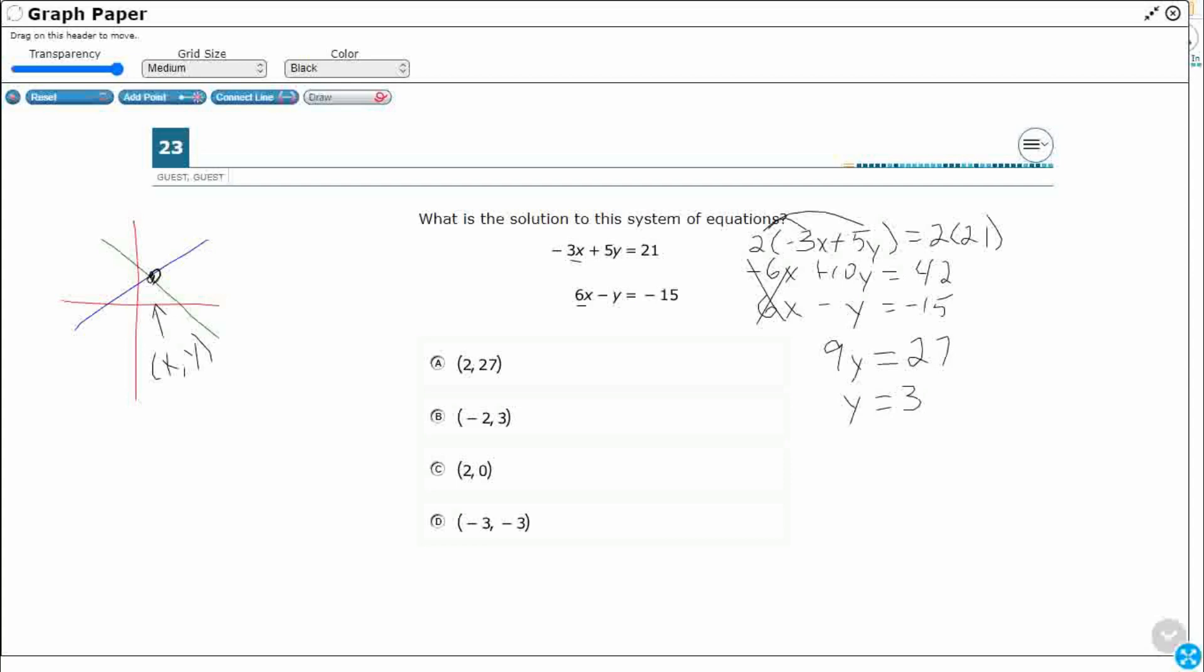Now, that looks like the only one that actually works. How do you find the X? Well, you plug in your Y into any of these. So, I've got -3X plus 5. Let's do that 3 there. It equals 21. So, -3X plus 15 equals 21. Let's subtract 15 from both sides. -3X equals, let's see, that's going to be a 6. So, divide by negative 3.